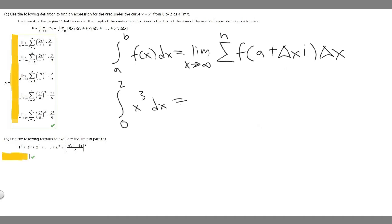And so what we're going to do is use this to solve this. So basically what we're going to do is take our x cubed, plug in this, a plus delta x times i, and then multiply it by delta x. And that's going to be this right here.